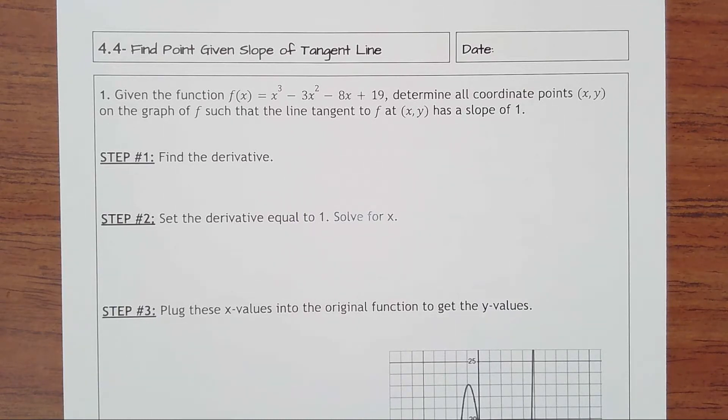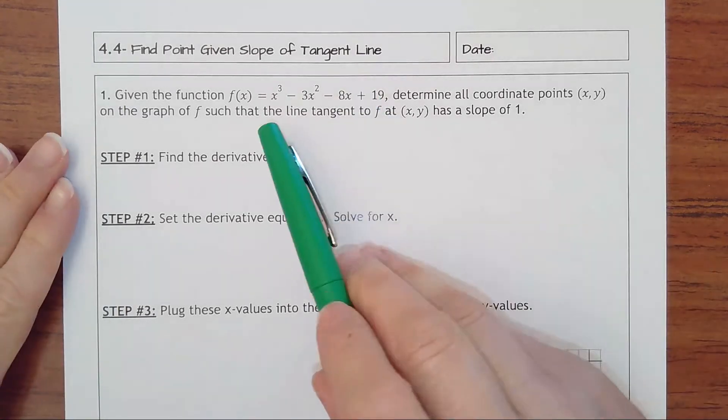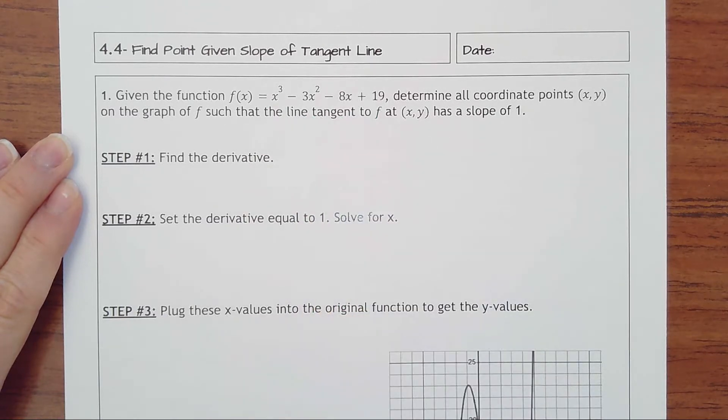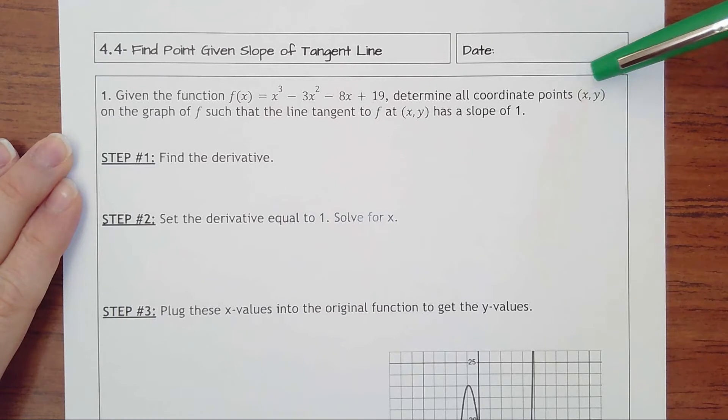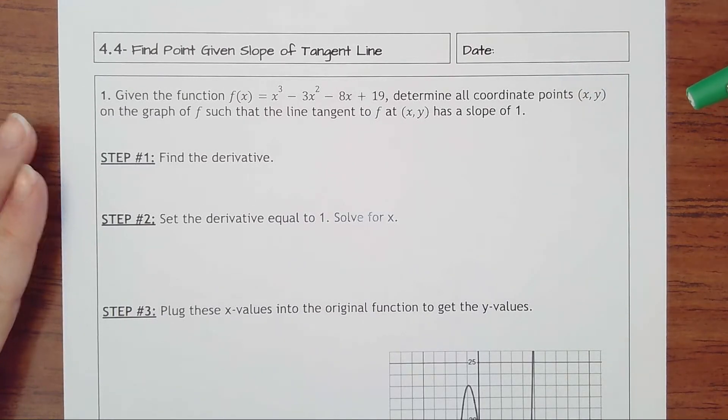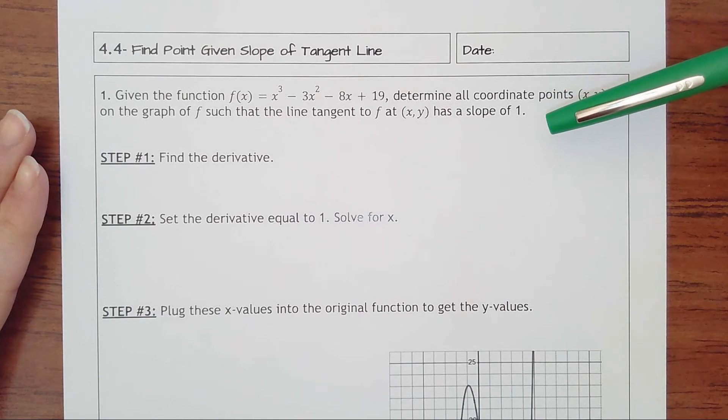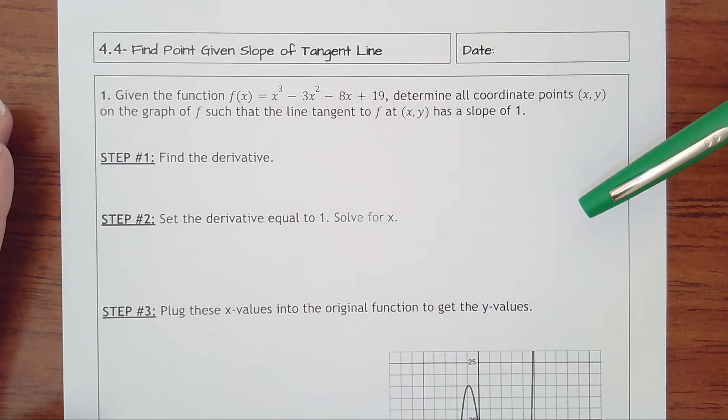Lesson 4.4: Find Point Given Slope of the Tangent Line. We're given a function f(x), a cubic function: x³ - 3x² - 8x + 19. Our job is to determine all coordinate points (x, y) on the graph of f such that the line tangent to f has a slope of 1. We're trying to find all points where there would be tangent lines with a slope of positive 1.